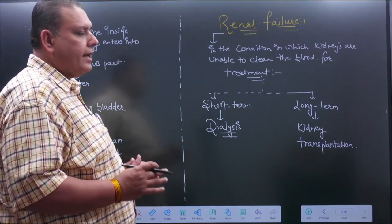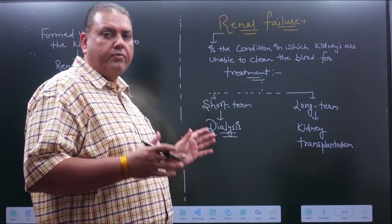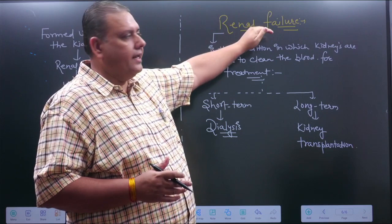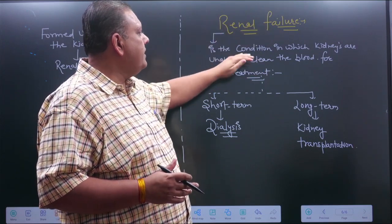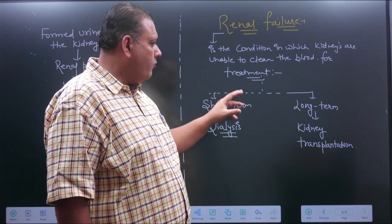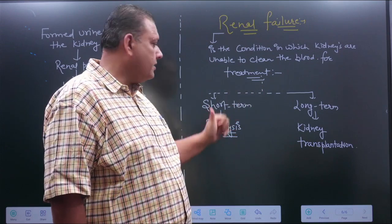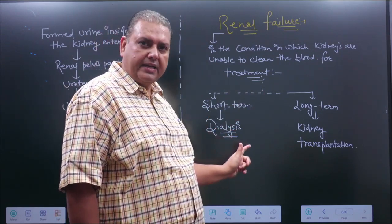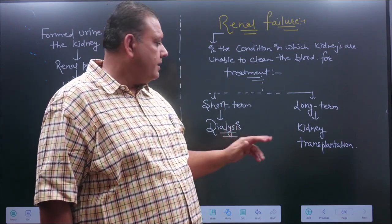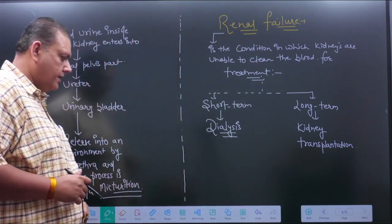Sometimes our kidneys become unable to perform this function, and that condition is known as renal failure — a condition in which kidneys are unable to clean the blood. There are two types of treatment: short-term treatment uses the process of dialysis, whereas long-term treatment involves kidney transplantation.